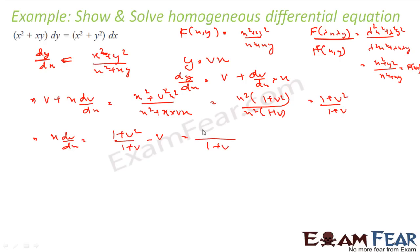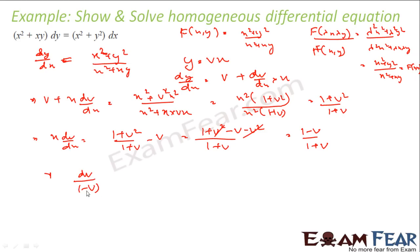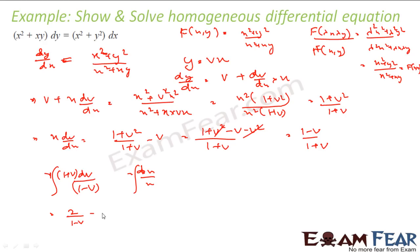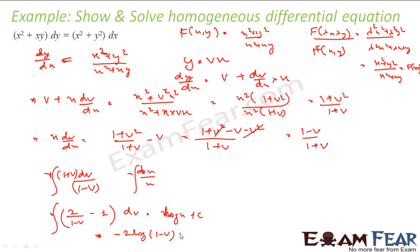Simplifying: (1 + v²)/(1 + v) minus v equals (1 + v²  minus v minus v²) over (1 + v), and the v² terms cancel, leaving (1 − v)/(1 + v). So (1 + v)/(1 − v) dv equals dx/x. Rewriting (1 + v)/(1 − v) as 2/(1 − v) minus 1, and integrating both sides, we get minus 2·log(1 − v) minus v equals log x plus c.